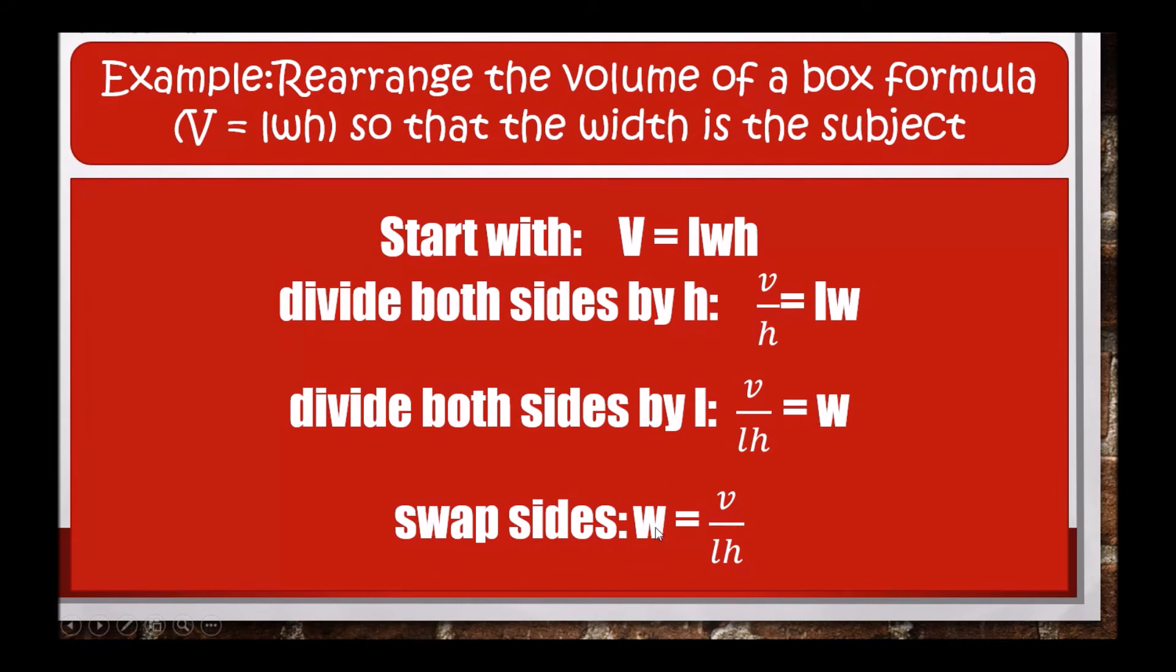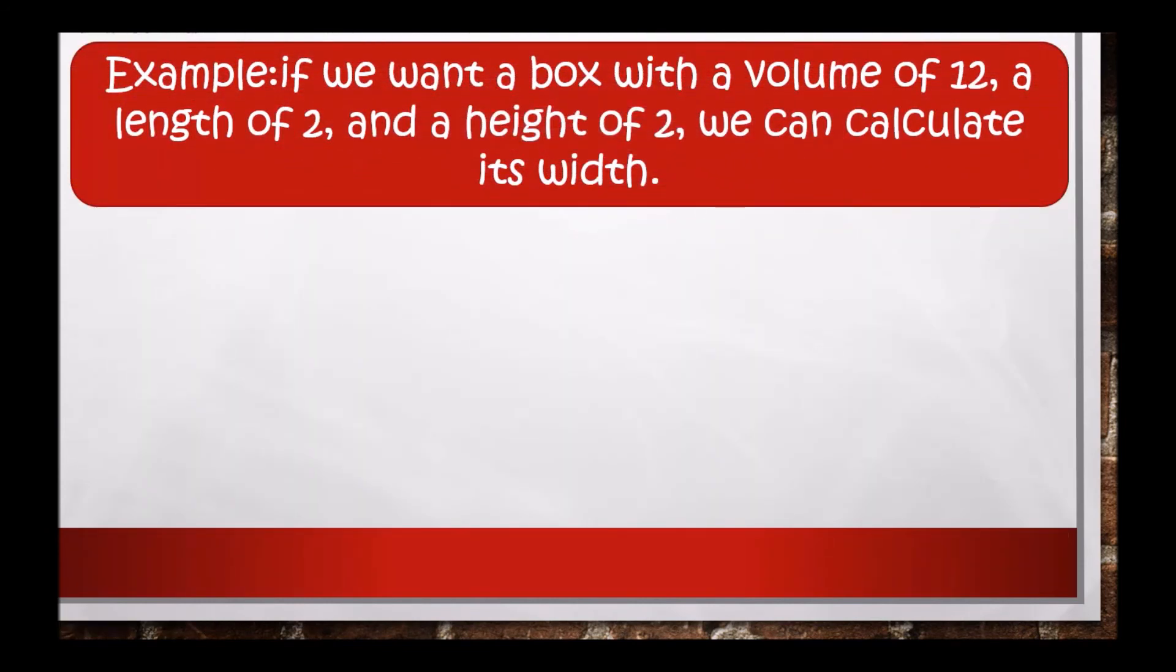Let's see with an example. If we want a box with a volume of 12, a length of 2, and a height of 2, we can calculate its width. How? With the formula W = V/(HL).